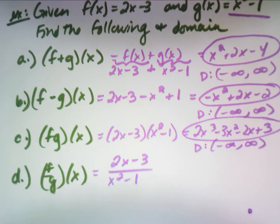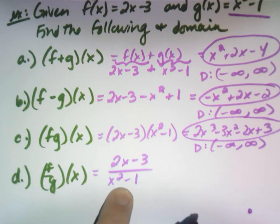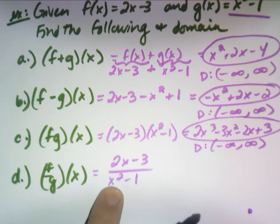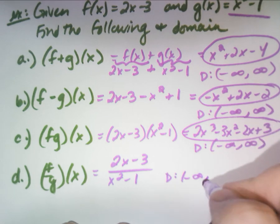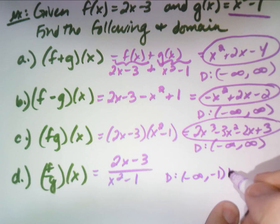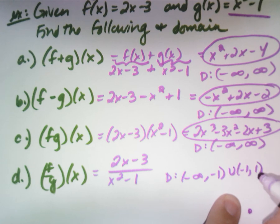For (f/g)(x), you just put one over the other: (2x − 3)/(x² − 1). Factor if you can, simplify if possible — this one you can't. The domain: fractions are restricted where the denominator equals zero. What values make x² − 1 equal to zero? One and negative one. So write the domain as (−∞, −1) ∪ (−1, 1) ∪ (1, ∞). That's the better way to write the domain.